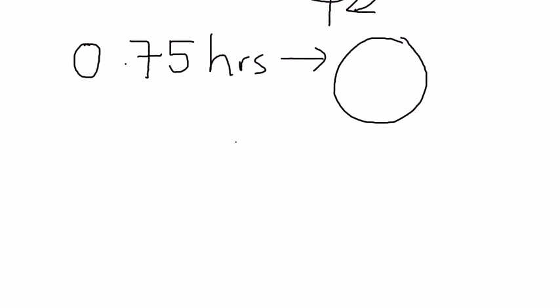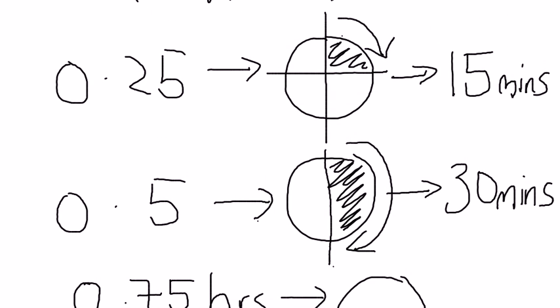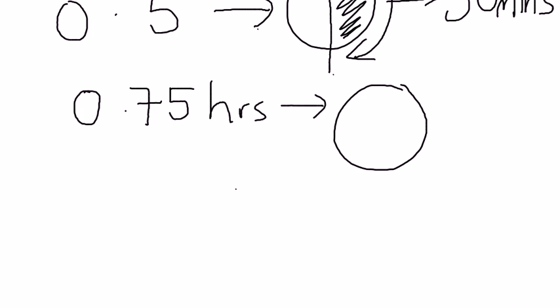Now, 0.75 hours. If you draw in a clock. Now, 0.75, 0.25 just now, if you look up, it is one quarter, which is 15 minutes. One quarter, which is one over four. Now, if we go down, now we have 0.75. 0.75 is three times 0.25.